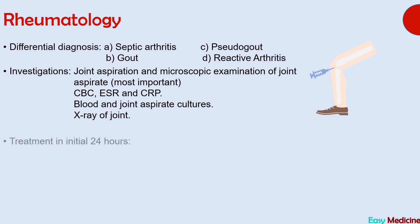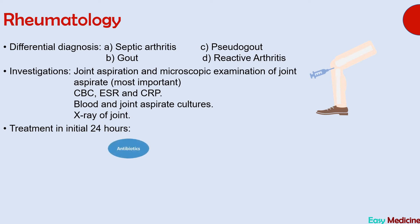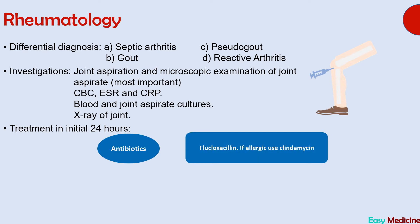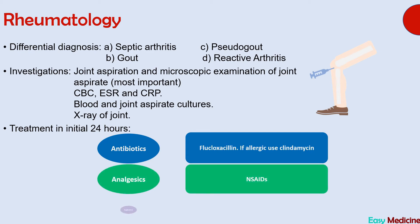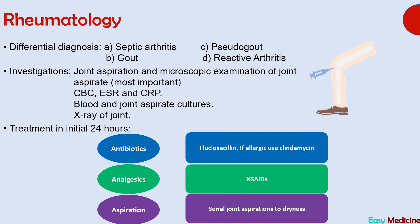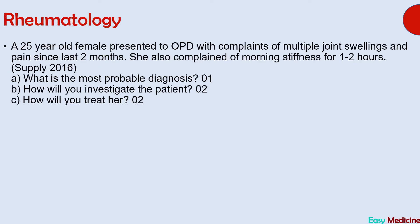Treatment within the initial 24 hours depends on the differential diagnosis and involves: antibiotics — flucloxacillin (or clindamycin if allergic), analgesics including NSAIDs, and repeated aspiration of the joint to dryness. The blue box provides Davidson's page number from where the answers are taken.